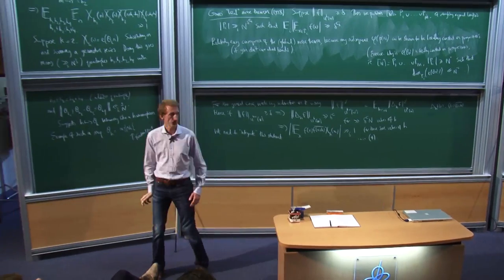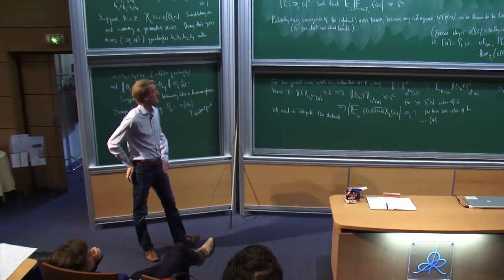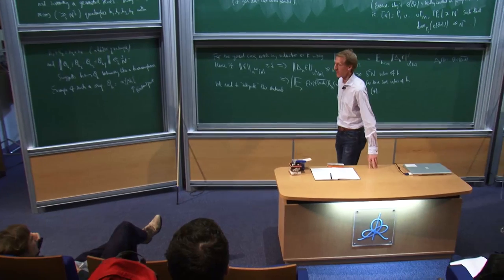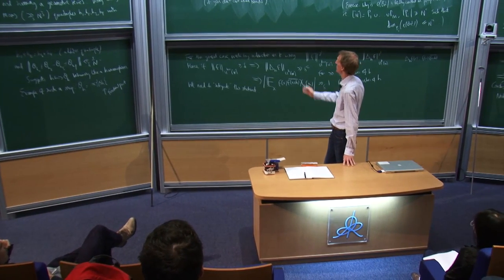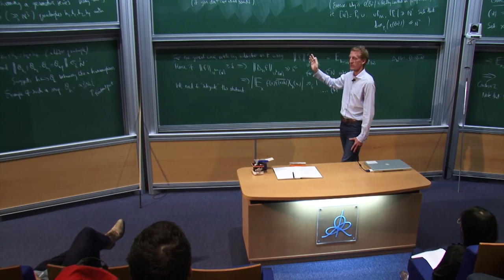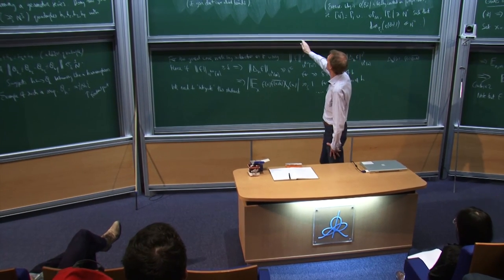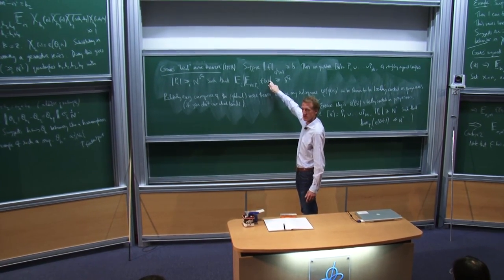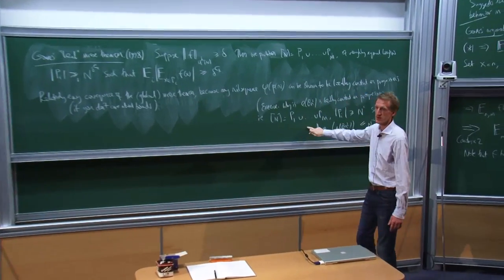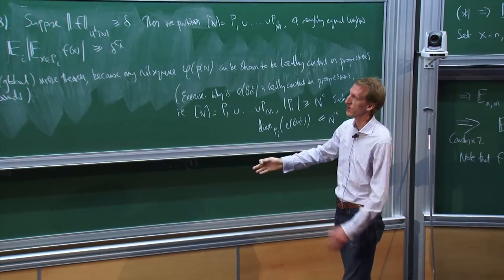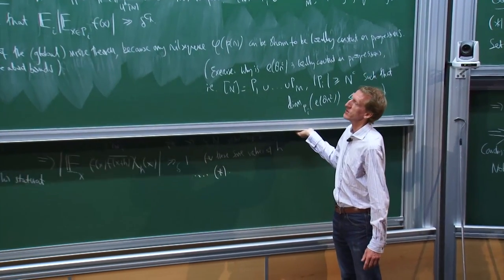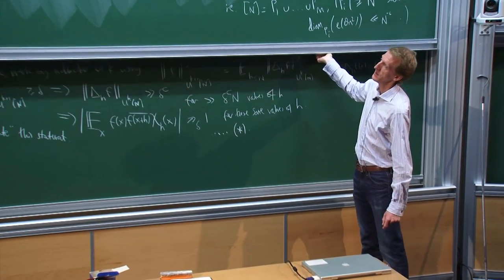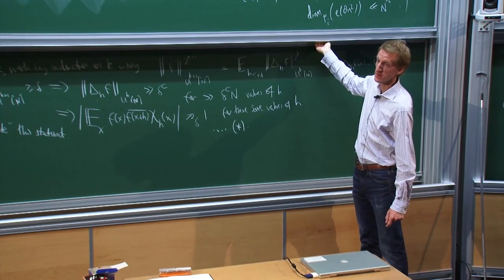Gowers has two papers. There's the masterful paper on four-term progressions where he proves basically this theorem for the U3 norm — though he doesn't state it quite like this, he has some additional quadratic phase. If you apply the observation about local constancy, you actually just get local constancy on some smaller progressions. And then he has a much longer paper. That paper is only 23 pages — truly a remarkable piece of work. And then the longer paper of 129 pages is doing the general case.